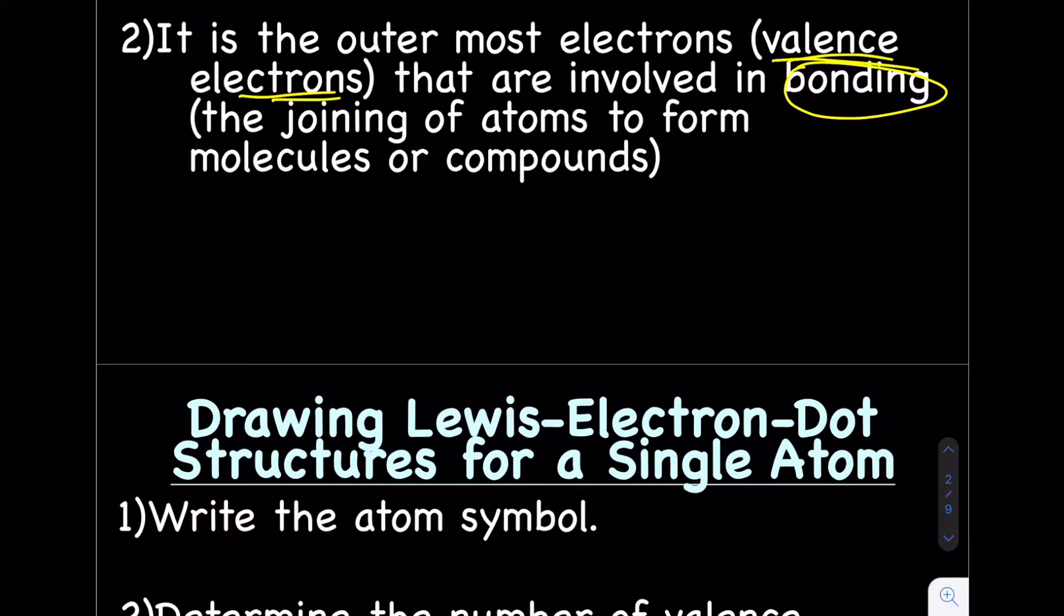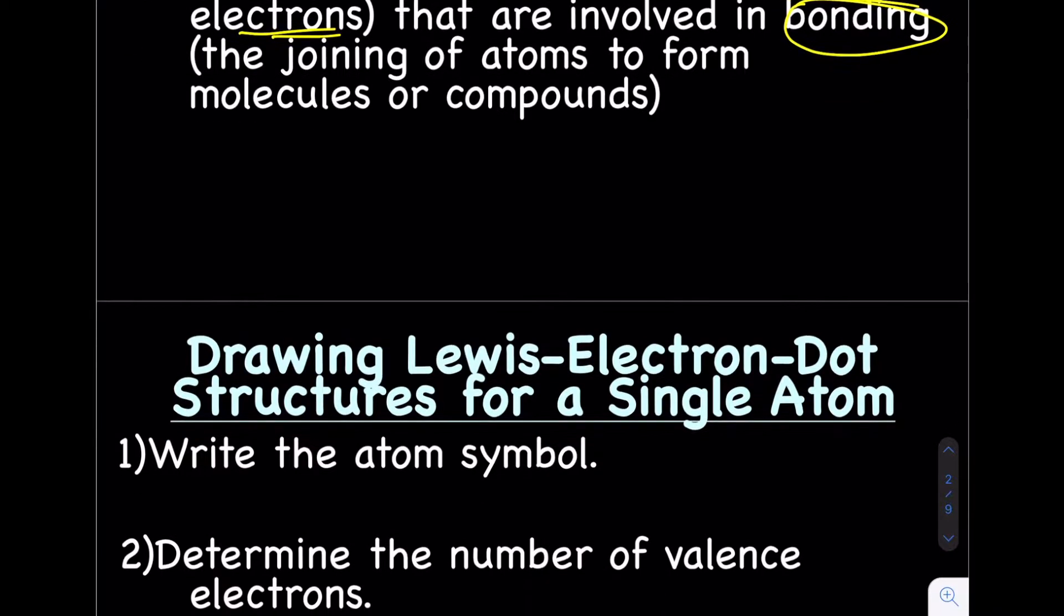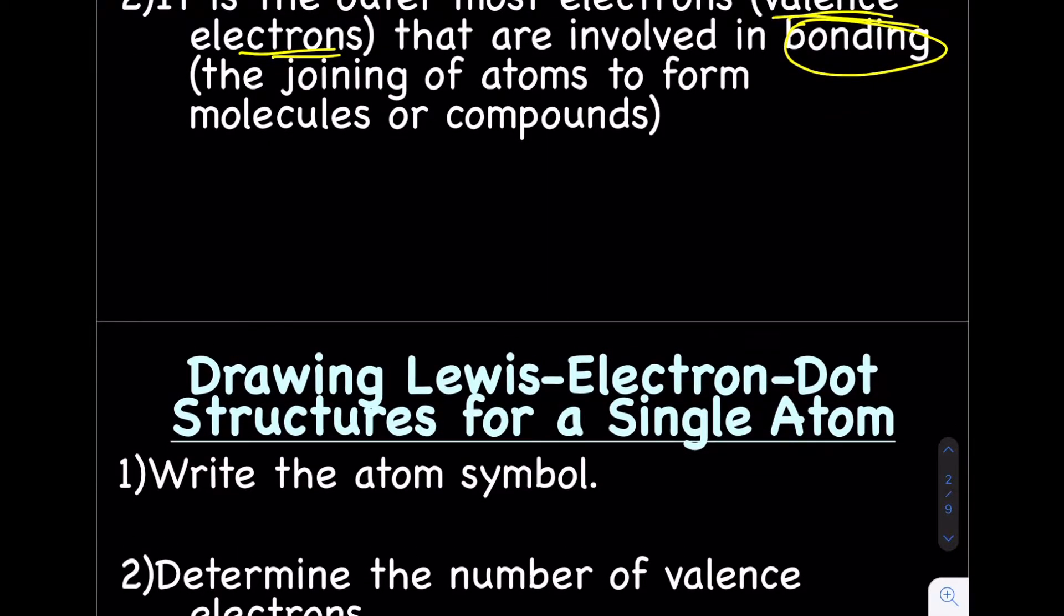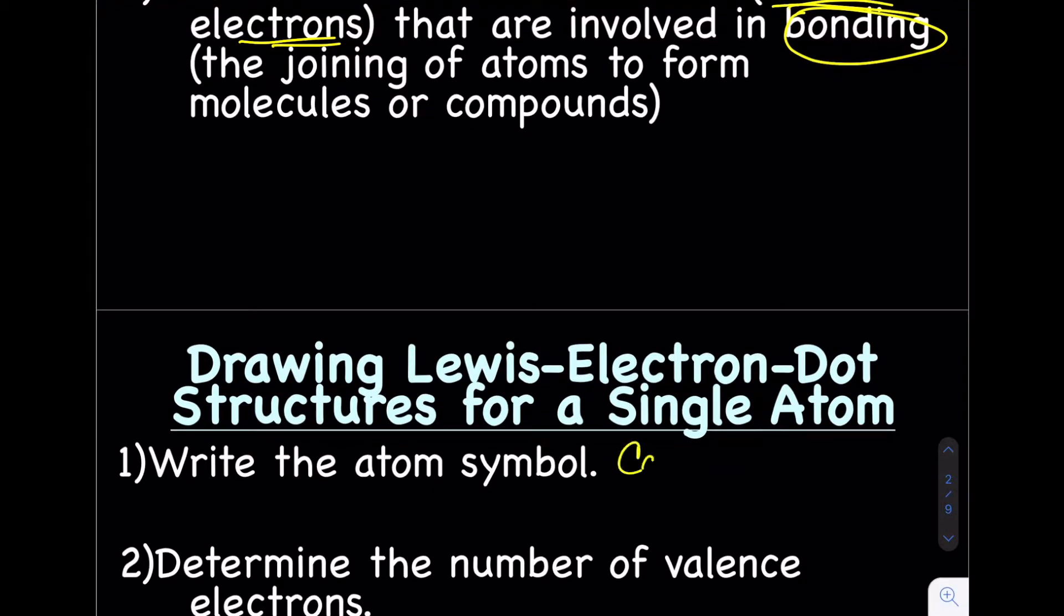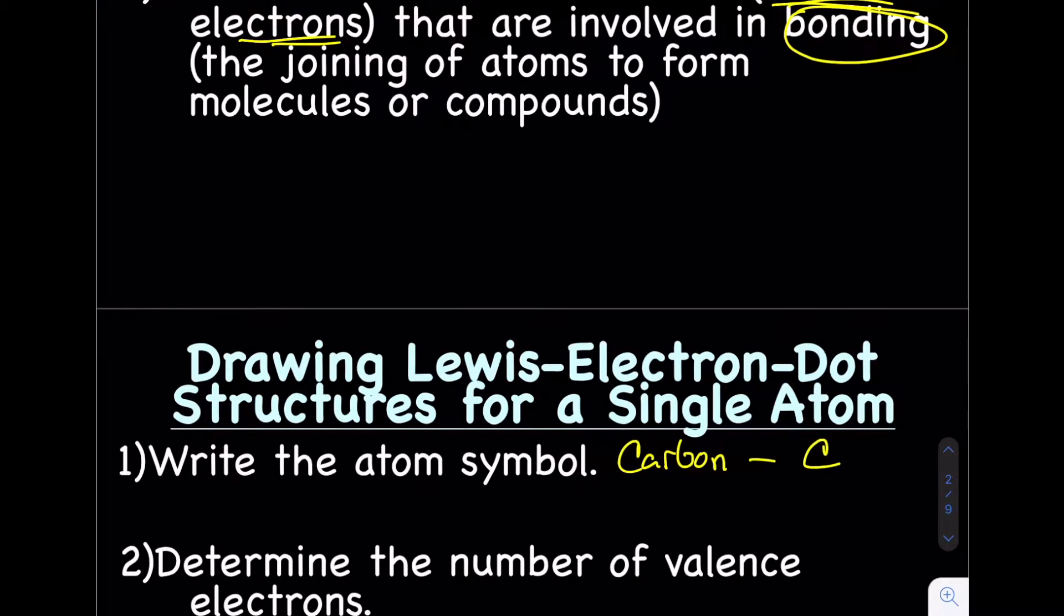Drawing Lewis electron dot structures for a single atom. The first step is to write the atom symbol. Hopefully that's fairly second nature by now, but just in case: if I were talking about carbon, the atom symbol would be C. If I was talking about chlorine, the atom symbol would be Cl. That's what I mean by draw the atom symbol.